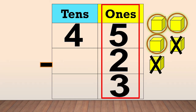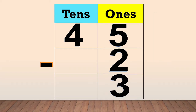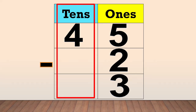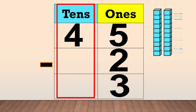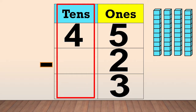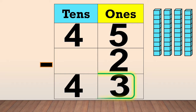We put 3 in the ones column. Now, we subtract the tens. We have 4 tens — 1, 2, 3, 4. But there is no number in the subtrahend in the tens column. That means there is nothing to subtract, so we bring down 4 tens. So, 45 minus 2 equals 43.